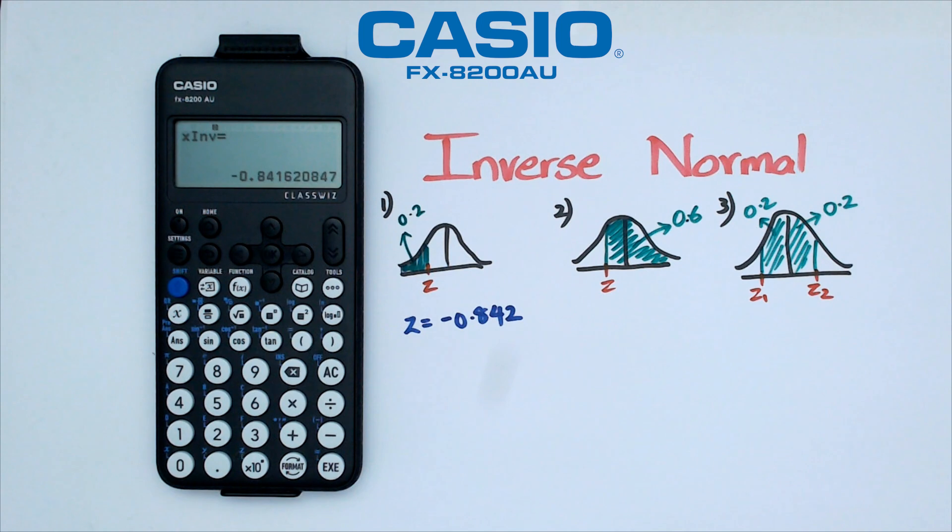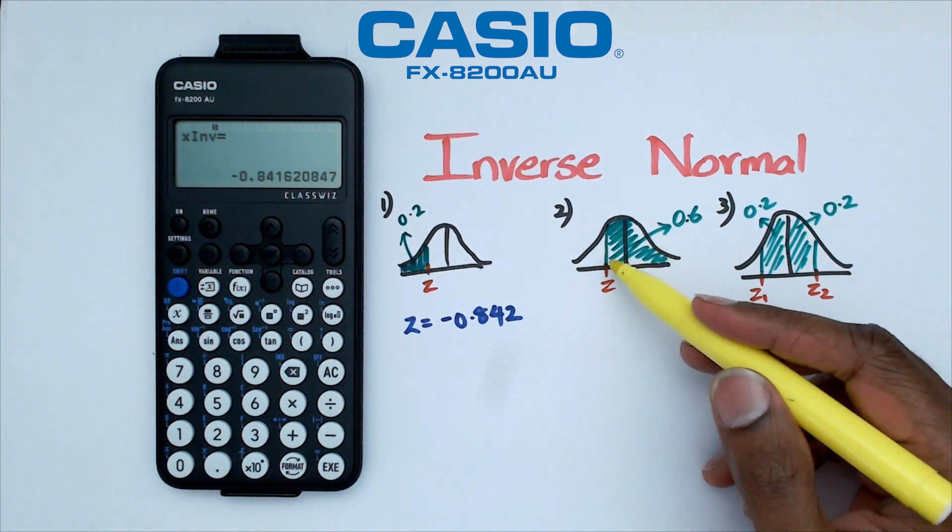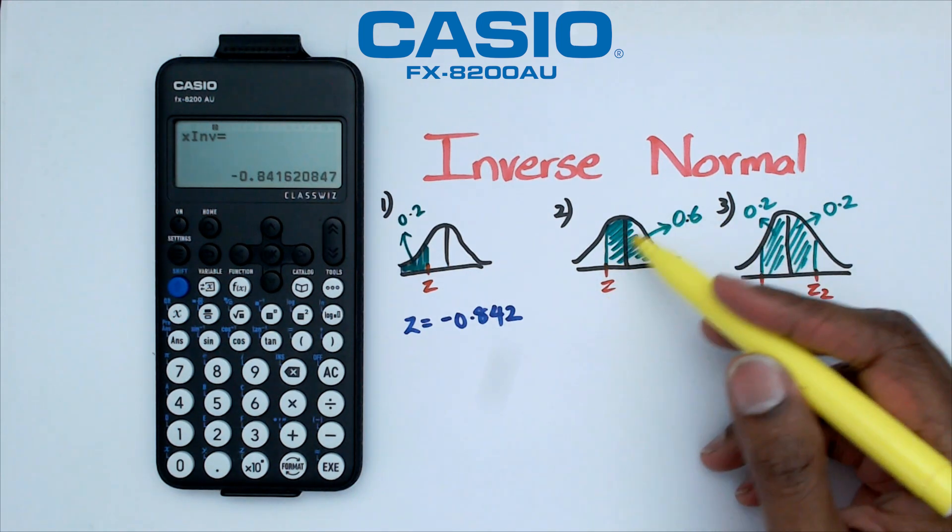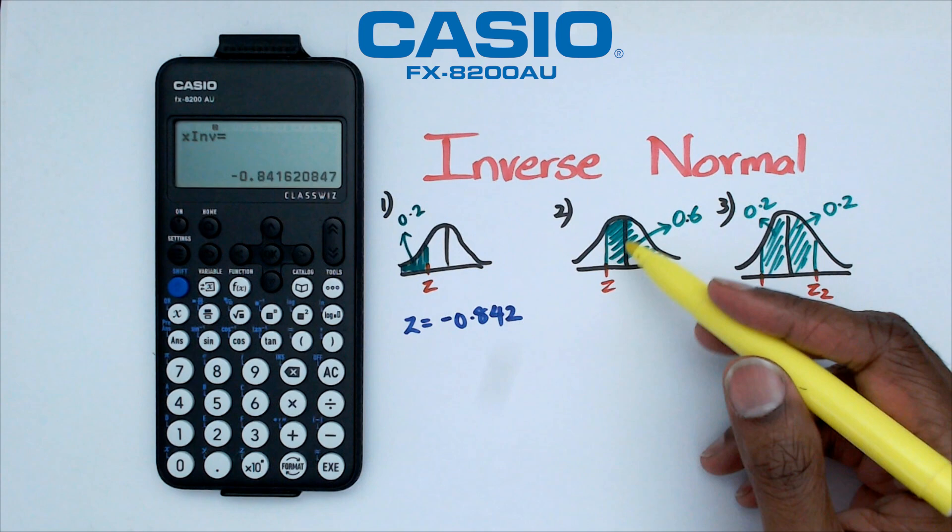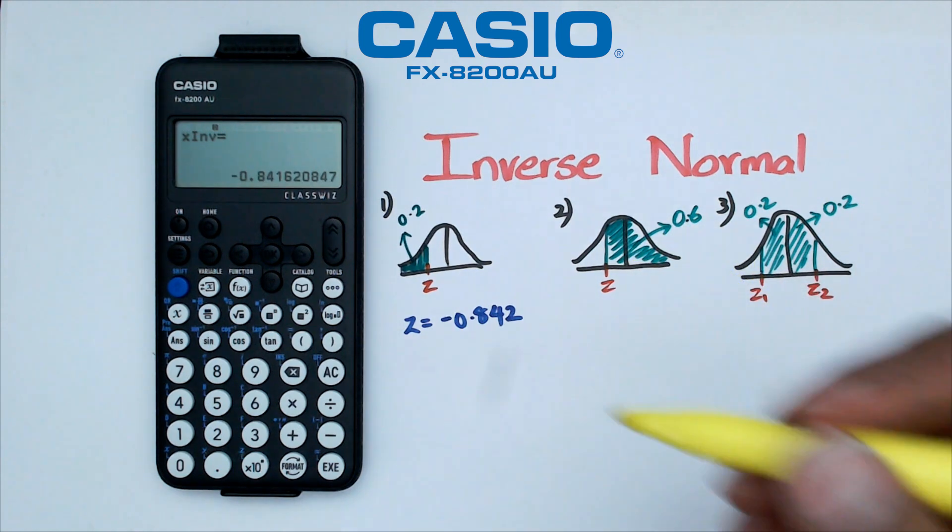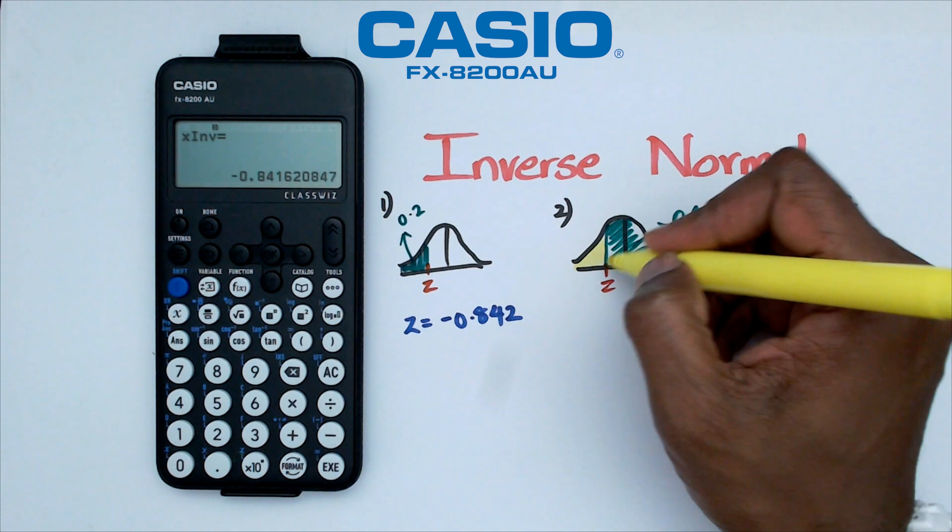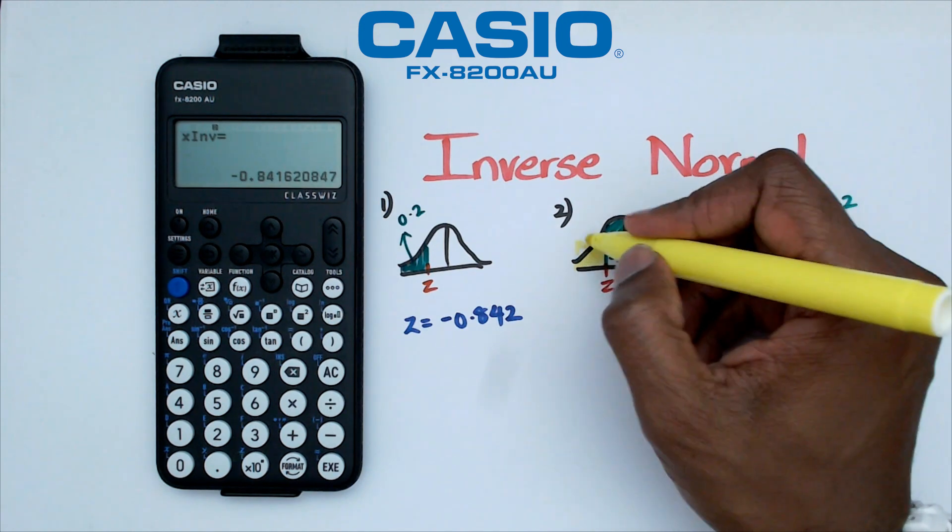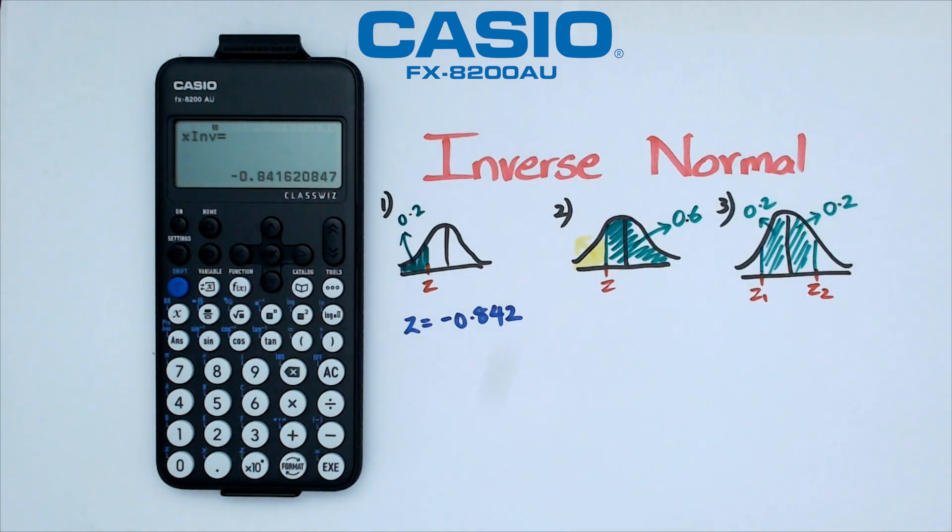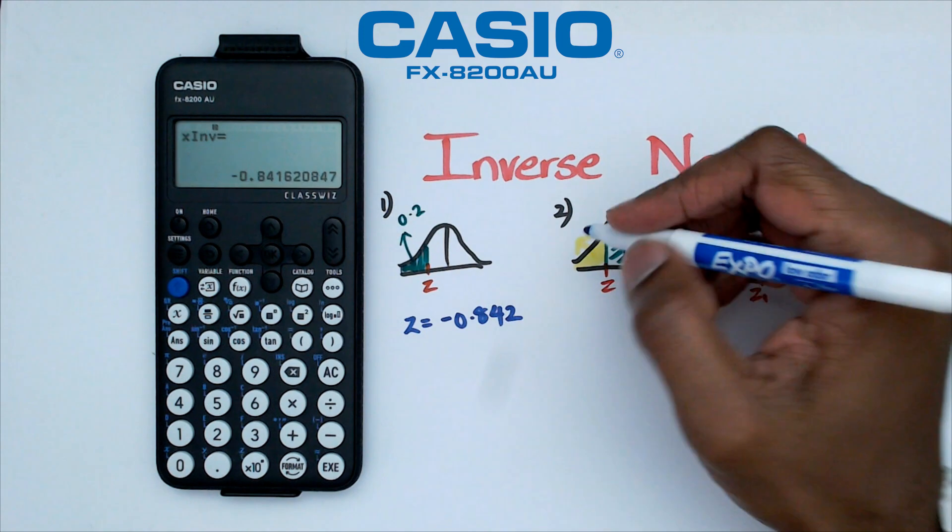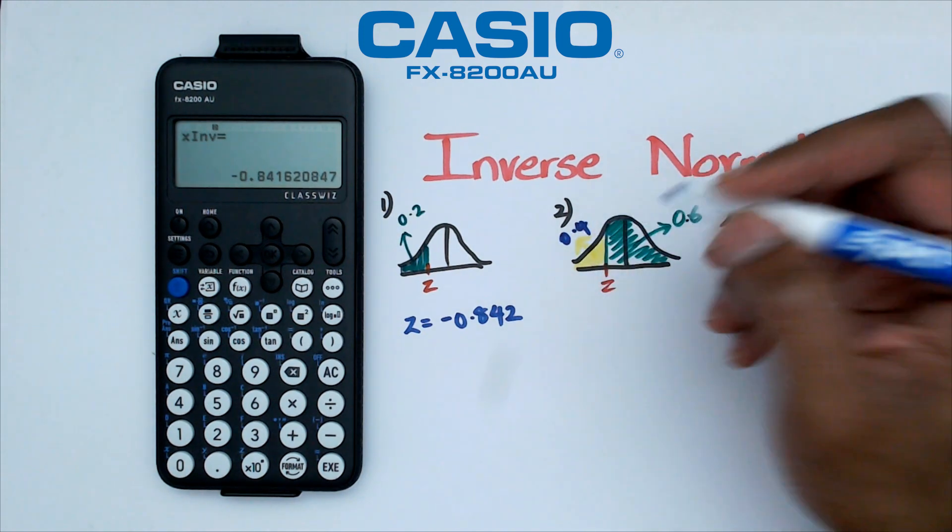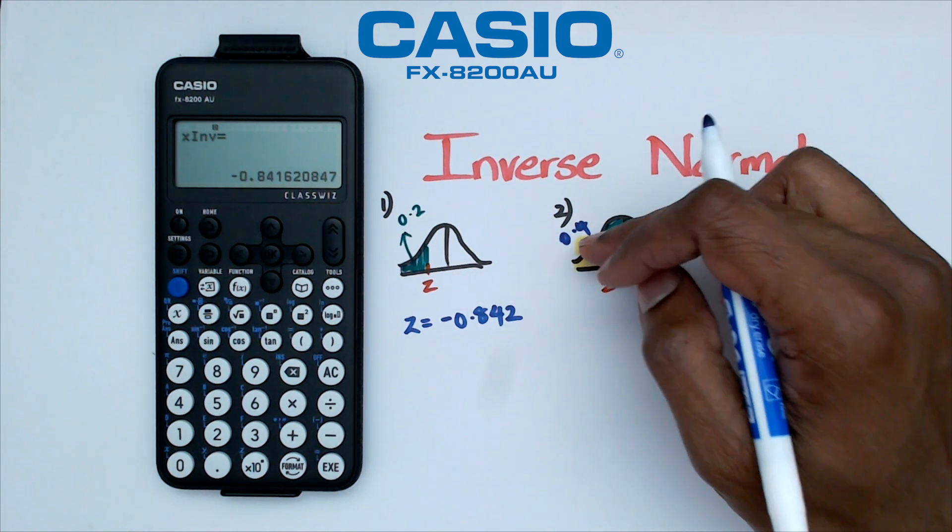But when you look at number two, what's happening is you've actually got 0.6 as the right area, the right side of the area that's 0.6. So to put this in the calculator, what we need to do is we need to actually put in what this yellow area is. Now the yellow area is equal to 0.4 because 1 minus 0.6 is 0.4.